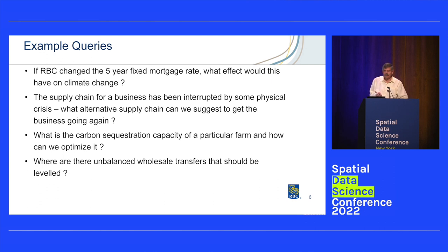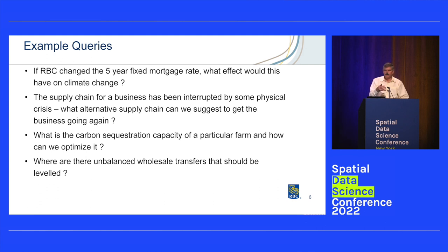Banks operate on trust — the reason you go to a bank and put your money there is that you trust the bank. That means we think banks are the right place to start this initiative and build up the digital twin capabilities, because other organizations already trust the bank with their funds. So it's reasonable for them to trust the bank with data that is safely sequestered behind the differential privacy.